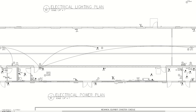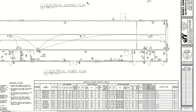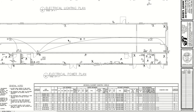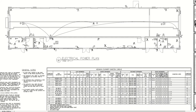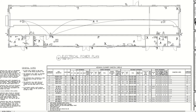Coming down to the power plan itself, you can see we have the general purpose outlets and the mechanical equipment. Here's the mechanical equipment schedule — we have fan coils, condensing units, electric heat, and so on. You should be able to match up the tag and see all the pertinent information for those connections, including circuit locations, branch circuits, pipe and wire sizes.